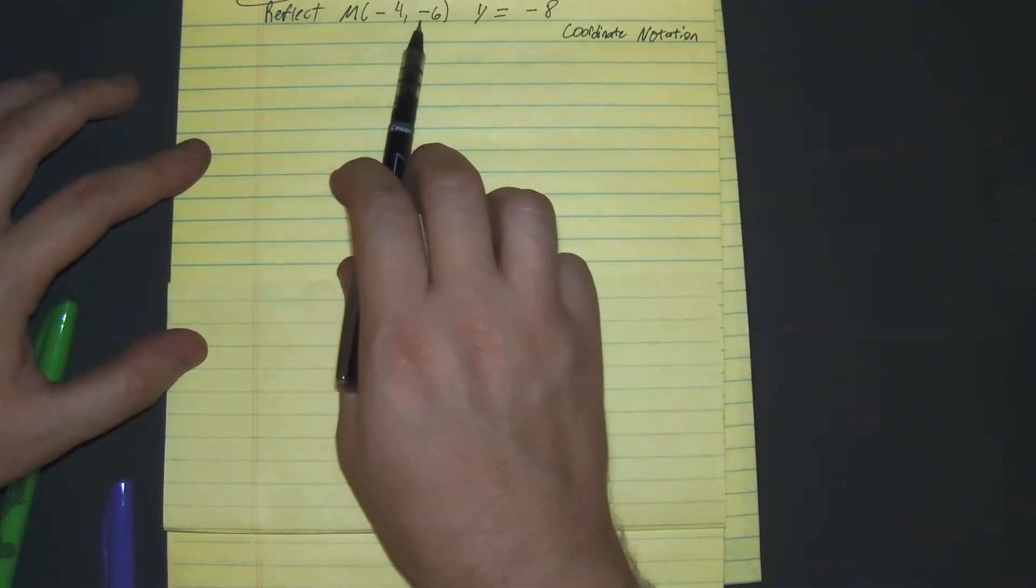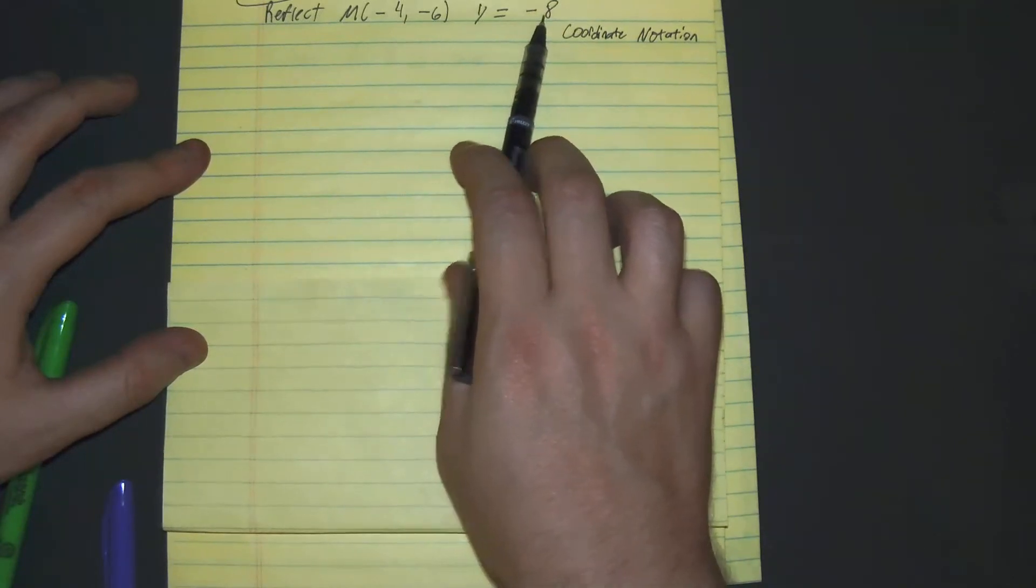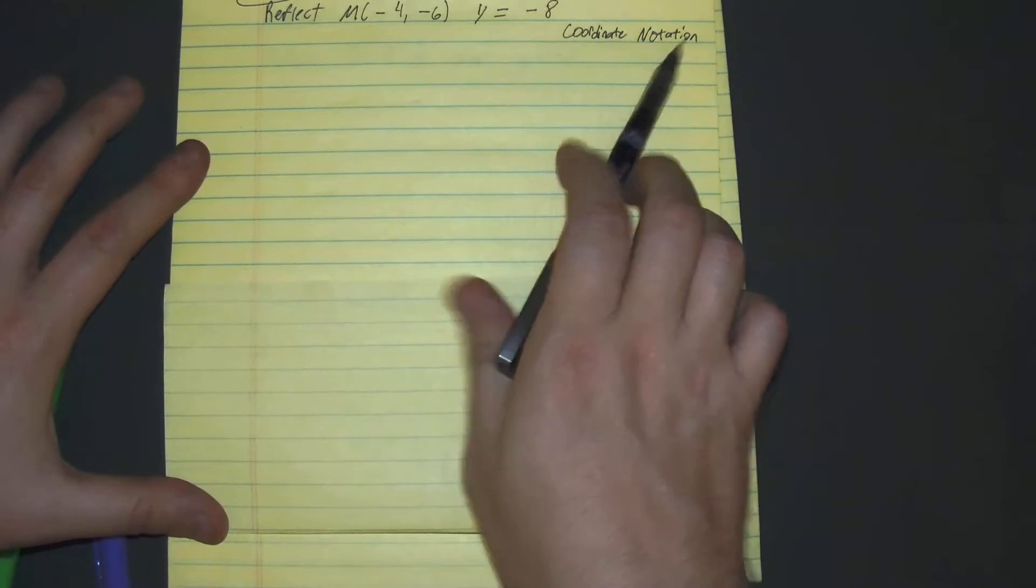Reflect M(-4, -6) over y equals -8. And in this problem, they want us to use coordinate notation.